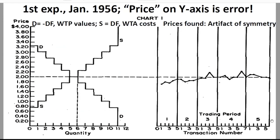Here's my first experiment. I did this in January 1956 — about 75 years ago. Notice on the left-hand diagram, I have price on the vertical axis. That's wrong — I was perpetuating this error. There are no prices on that vertical axis, only values and costs: the values of the buyers and the costs of the sellers. These are discrete — each person has just one unit in that representation. On the right-hand diagram, there are prices, but they're the ones coming out of the market — the prices being discovered in the market.